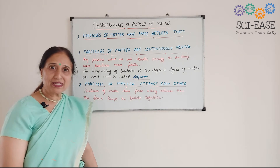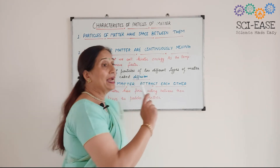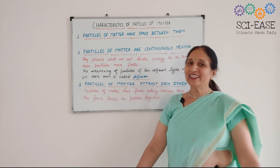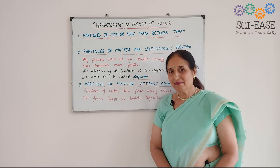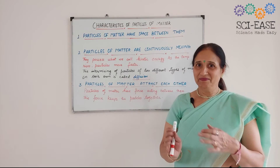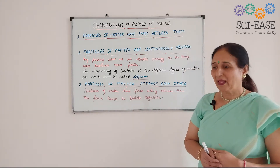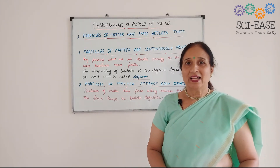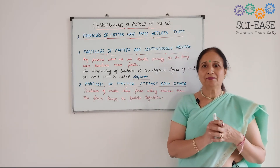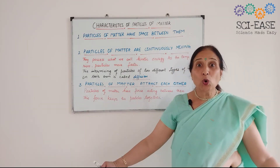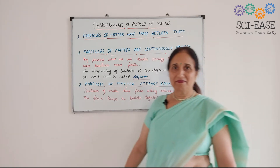Two characteristics have been covered. Now the third characteristic is that particles of matter attract each other. For this, we will do a very interesting activity. Go to the field and make four groups of children, with each group having five children. The first group will hold each other from the back and lock it, like the Bihu dance.